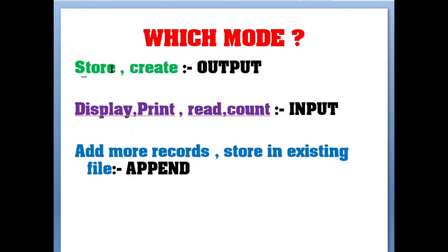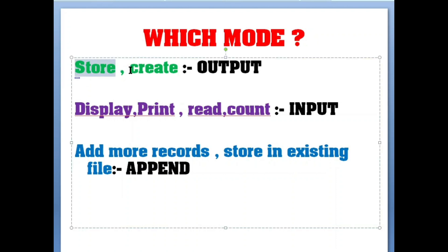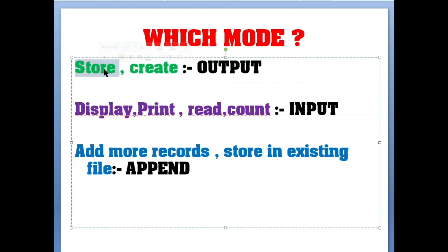You may be confused about which mode to use in which program or question. Whenever you see the word 'store' or 'create' in the question, you need to use OUTPUT mode, because output mode creates a new file and stores data into it. If the question says 'create a file' or 'store data into the file,' you should use output mode.